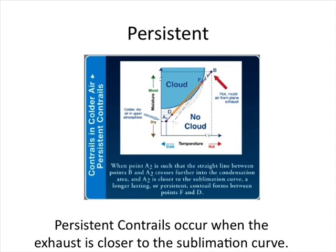Persistent contrail formation: When point A is such that the straight line between points B and A crosses further into the condensation area, and A is closer to the sublimation curve, a longer-lasting or persistent contrail forms between points F and D.